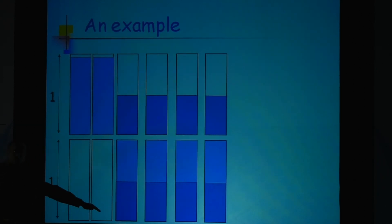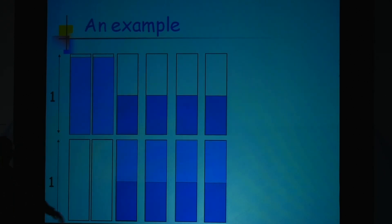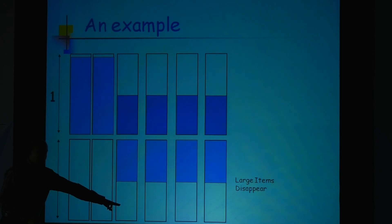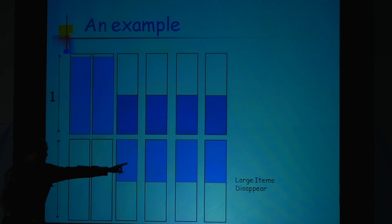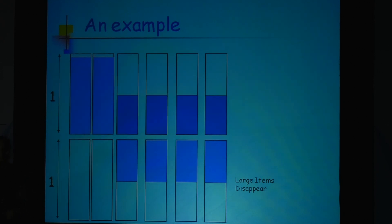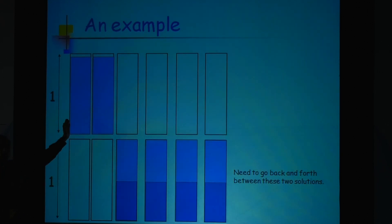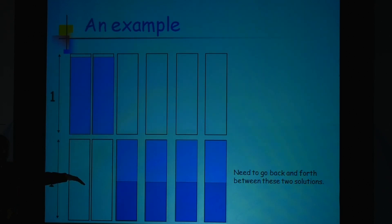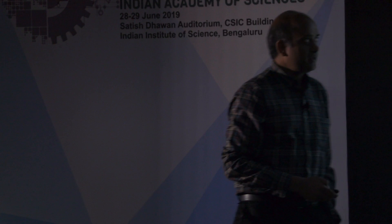But now suppose all four of those larger items disappear — you realize this is bad, you should move back to the two-bin configuration. But this can happen many times. That is why just using first fit and fixing things when they go bad does not work.